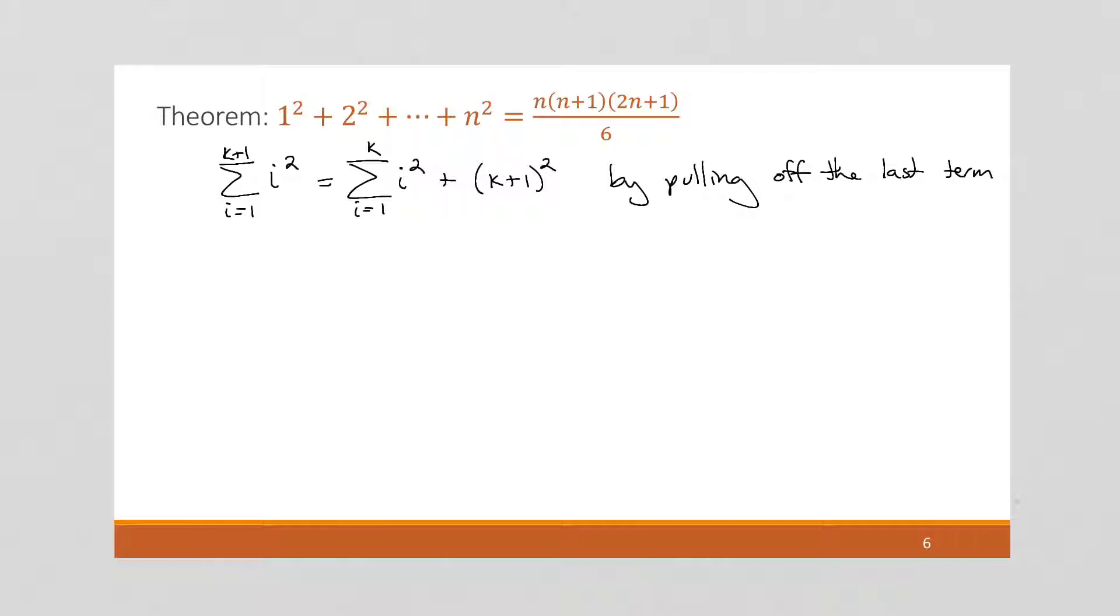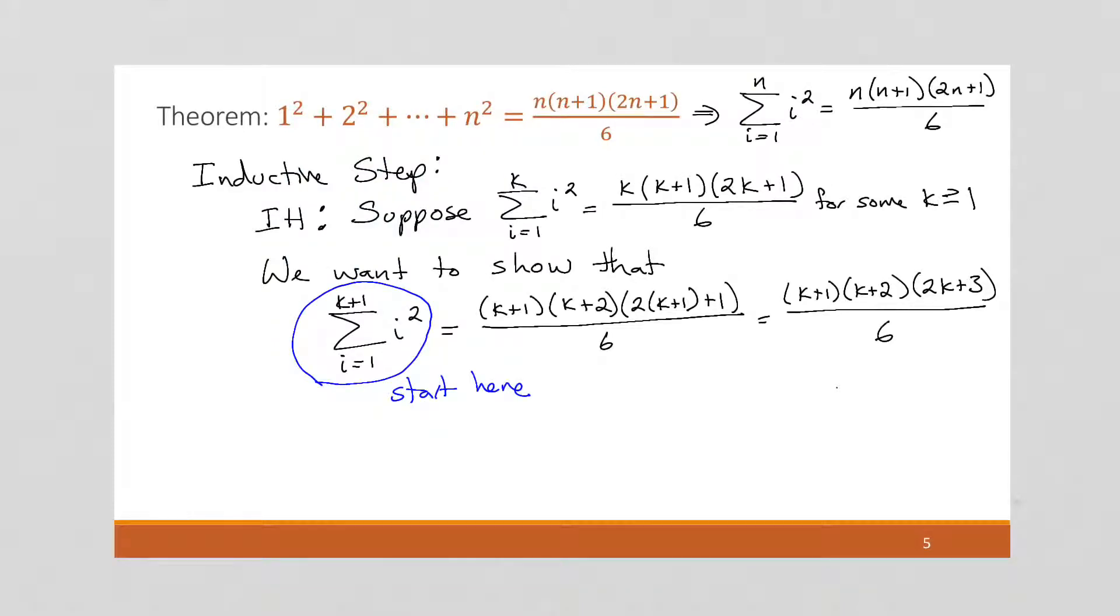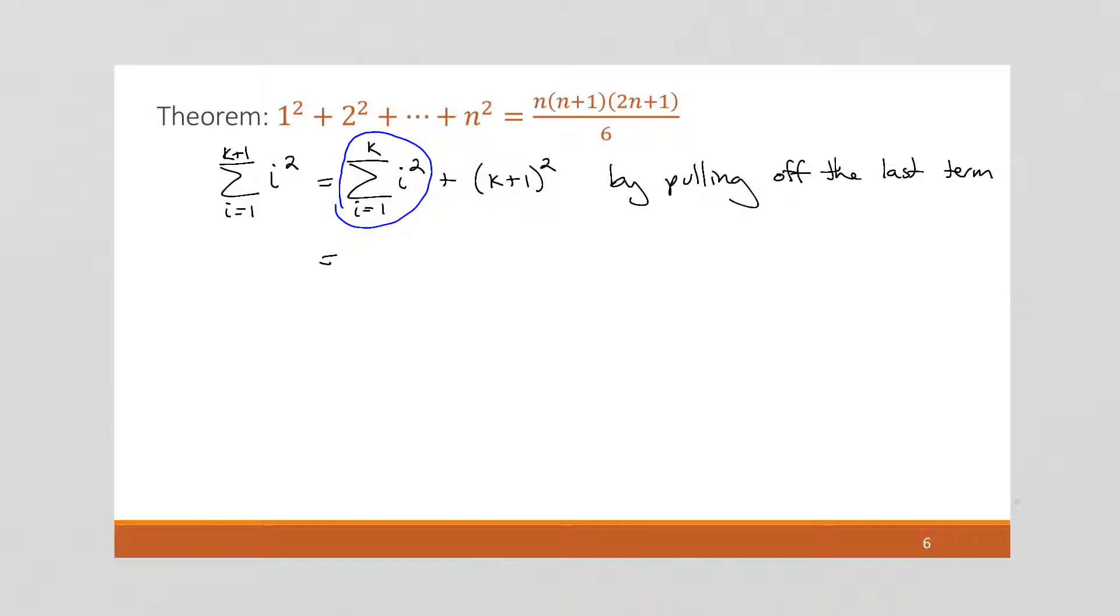And we can use the inductive hypothesis on this part. We know what that is. This whole thing is going to equal, if we go up and look at our inductive hypothesis, it's going to equal that. All right, so we can substitute this part in for that. So this is going to equal k times (k plus 1) times (2k plus 1) over 6. And then we can't forget this last term over here by the inductive hypothesis. Now, once again, we have a bunch of algebra. I think the algebra is the worst part of these.